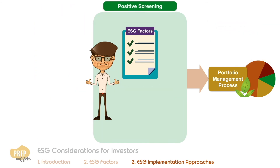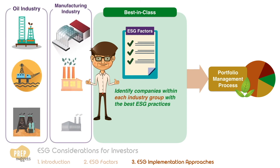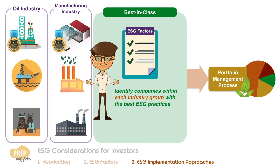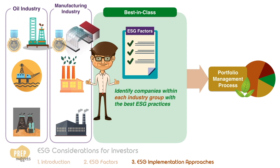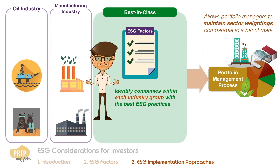A related approach, the best-in-class approach, seeks to identify companies within each industry group with the best ESG practices. This approach does not exclude any industry but instead focuses on finding the best representation within each sector, allowing portfolio managers to maintain sector weightings comparable to a benchmark index and reducing the risk of overweighting or underweighting certain sectors due to ESG considerations.